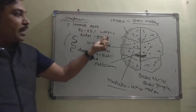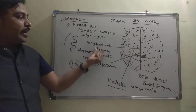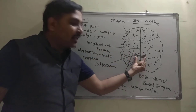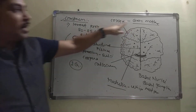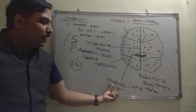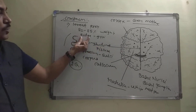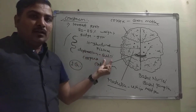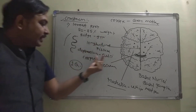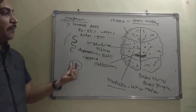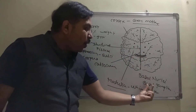To summarize cerebrum: it is the largest part, forming 80–85% of brain weight. It is divided into two hemispheres separated by the longitudinal fissure and connected by the corpus callosum. The peripheral cortex is grey matter, the inner medulla is white matter. The folds are gyri (ridges) and sulci (depressions), related to IQ. Masses of grey matter in white matter are called basal nuclei or basal ganglia.